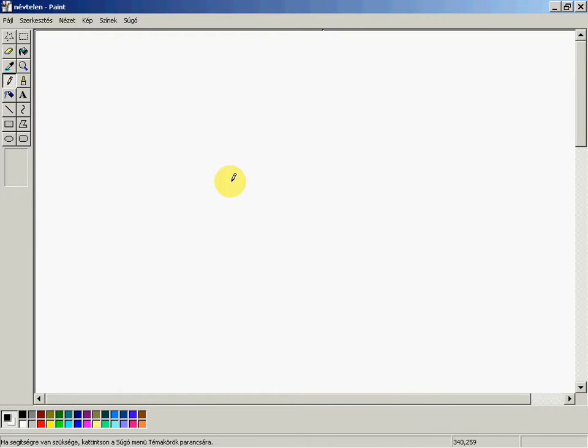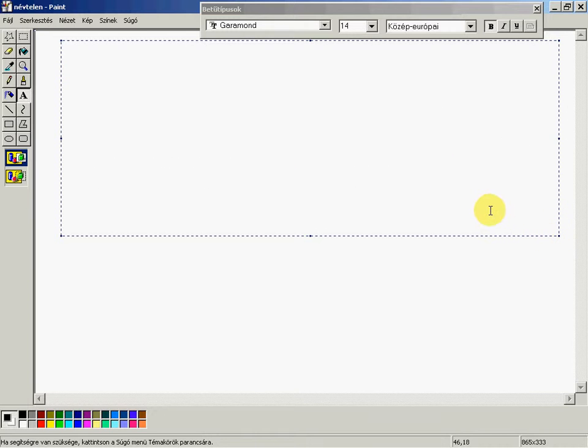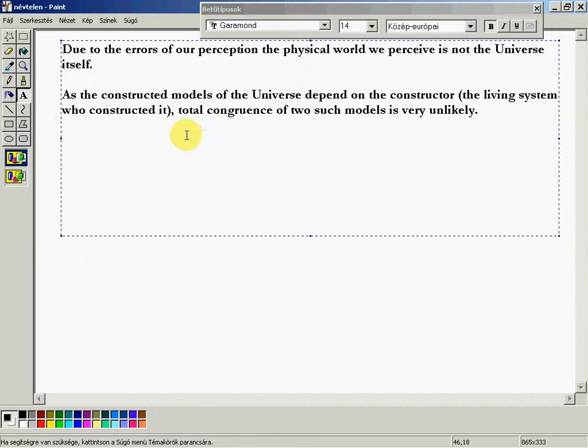The next part of the series on repeated random restructuring has two topics. Due to the errors of our perception, the physical world we perceive is not the universe itself.